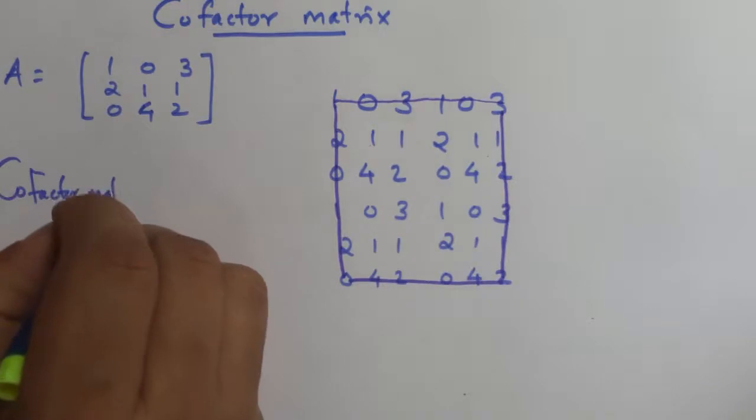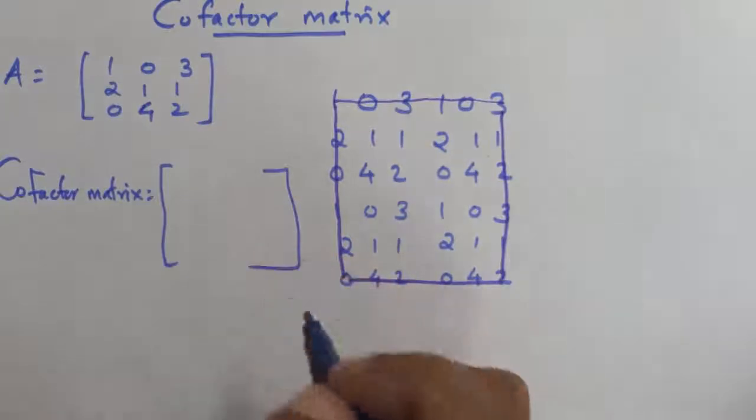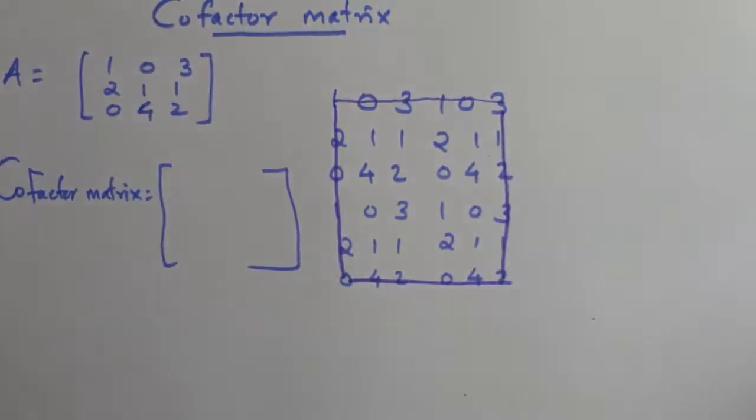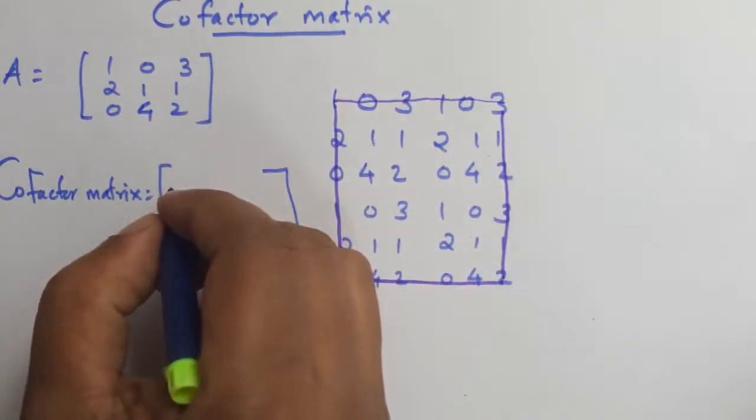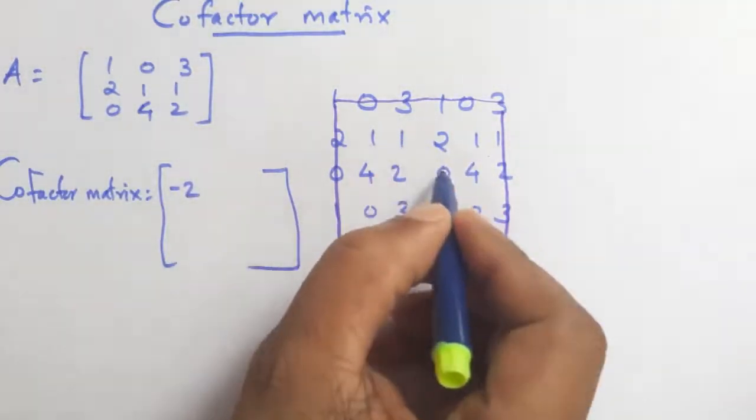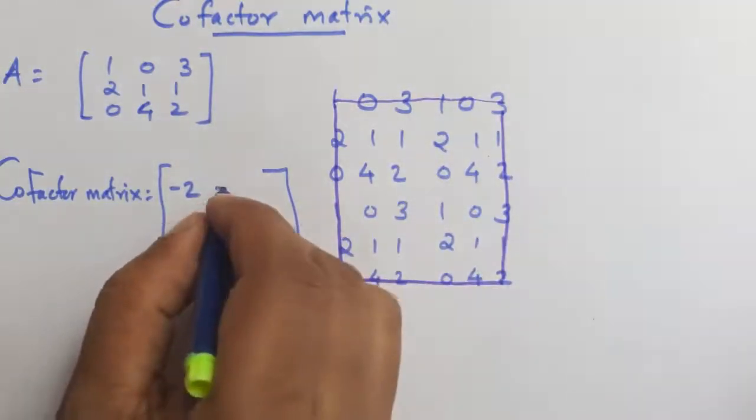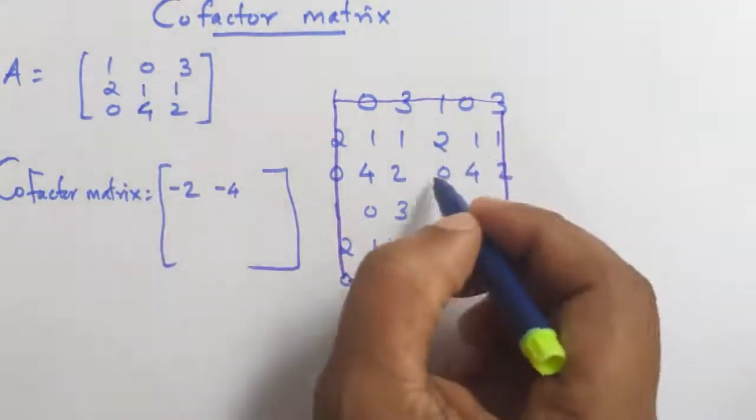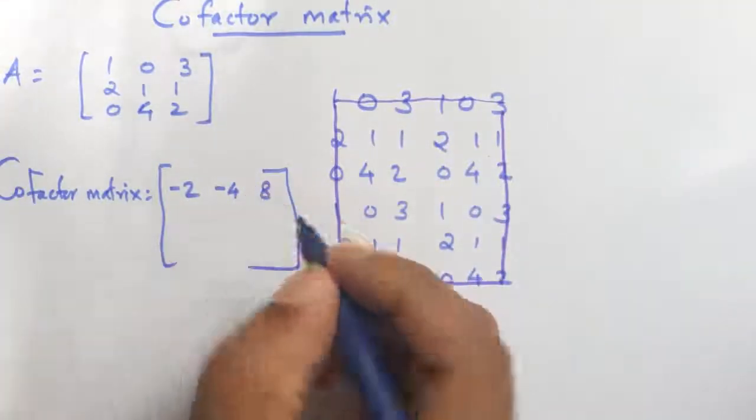First element is done in cofactor matrix. 1 into 2 minus 4. 2 minus 4. 1, 0, 0, 0, 0 minus 4. 2 1 0 4 2, 4, 8, 8 minus 0, 8.